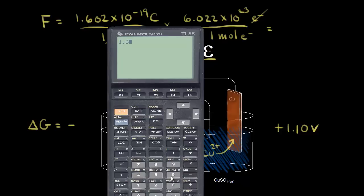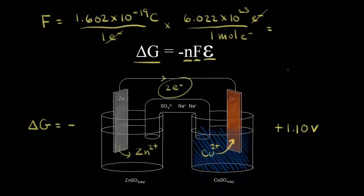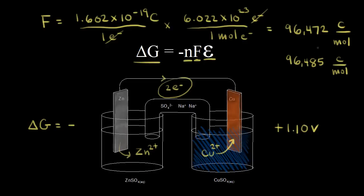We have 1.602 times 10 to the negative 19, multiplied by Avogadro's number, 6.022 times 10 to the 23rd, and we get 96,472. So Faraday's constant is 96,472 coulombs per mole. A more careful calculation gives 96,485 coulombs per mole, and most of the time you can just round to 96,500 coulombs per mole — that's good enough for almost all calculations.